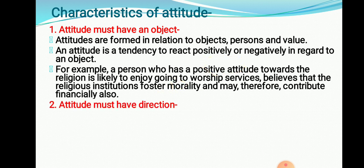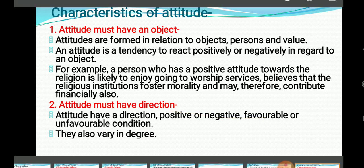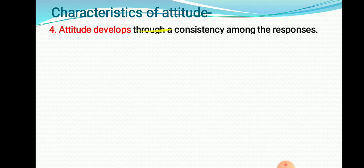If a person is having a negative attitude, he is going to avoid each and every thing. Second characteristic: attitude must have direction. That means positive or negativeness — attitude has a direction: positive, negative, favorable, or unfavorable. But it varies in degree; positive is not one hundred percent positive, negative is not one hundred percent negative. Attitude is organized into a system and does not stand loosely or separately. Then, attitude develops through consistency among the responses — not just one positive or negative response, but through continuously positive or continuously negative responses.